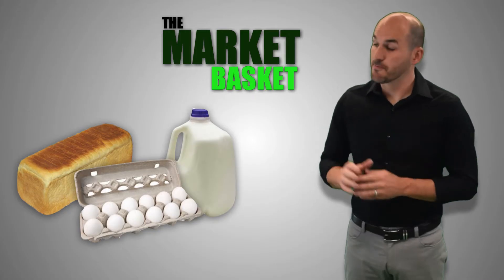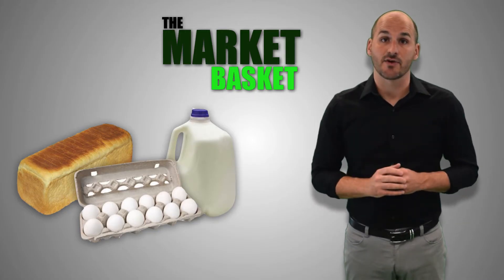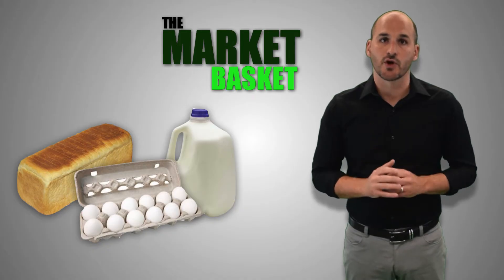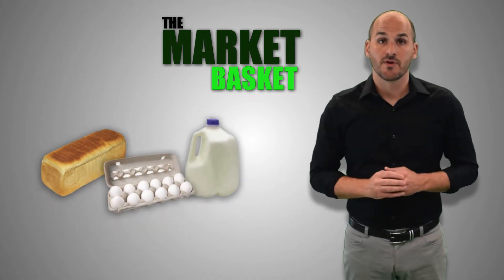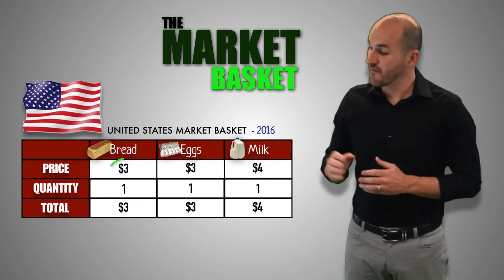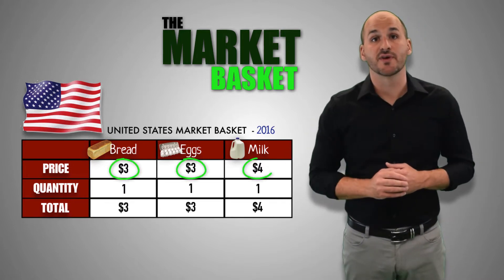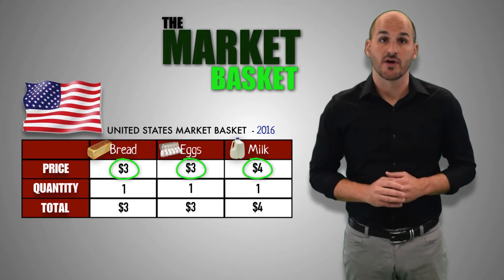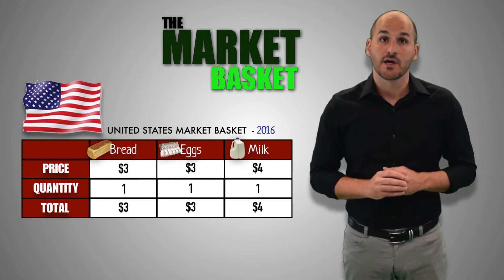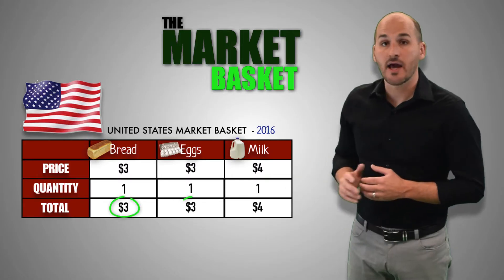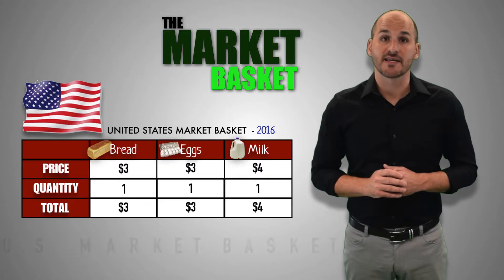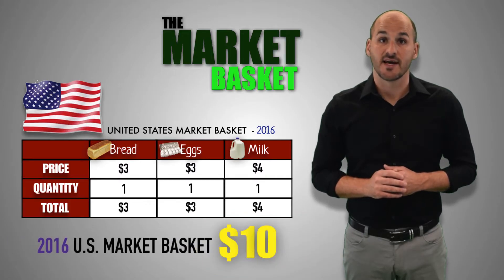To find its value, the price of every good is added together to find the sum value of the market basket of consumer goods and services in the current year. For example, to find the market basket for 2016, we would take the price of every item included in the market basket in 2016 and add them together, giving us the sum market basket value. In this case, when adding together the price of bread, eggs, and milk in 2016, the 2016 market basket value in the United States is $10.